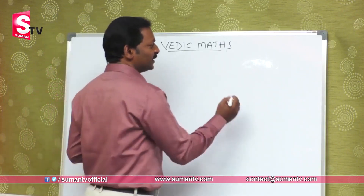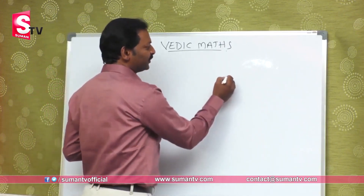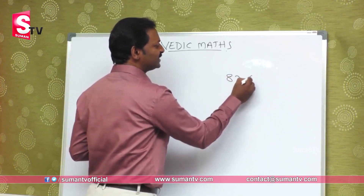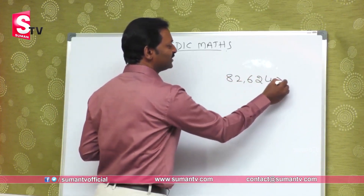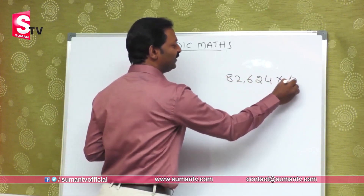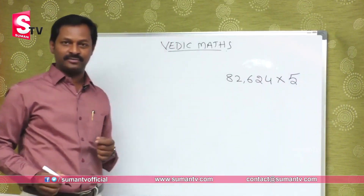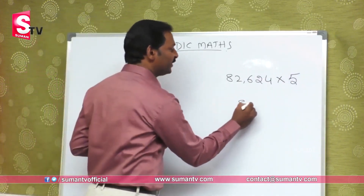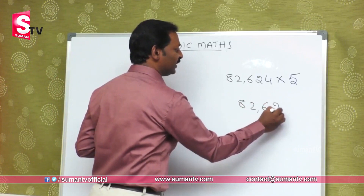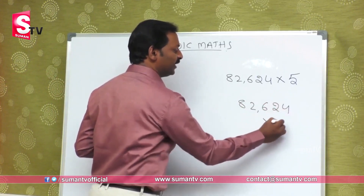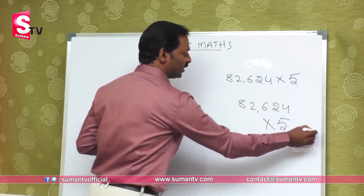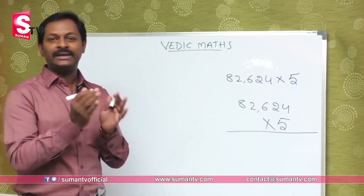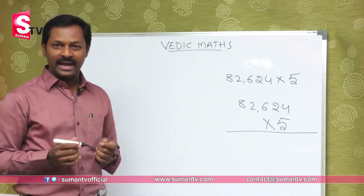Suppose you have 82,624 multiplied by 5. What do you do? We have to work through this.